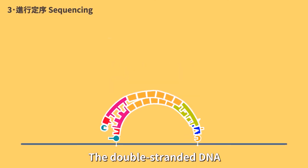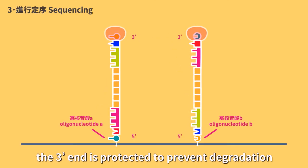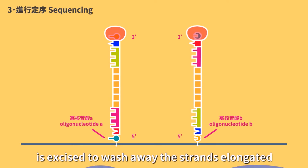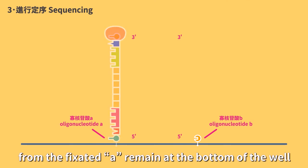Step 3: Sequencing. The double-stranded DNA in the clusters are denatured and separated. The 3' end is protected to prevent degradation, and the connection at oligonucleotide B is excised to wash away the strands elongated from the fixated B, so that only the strands elongated from the fixated A remain at the bottom of the well.